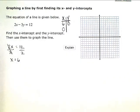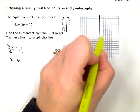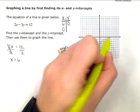My x-intercept is at (6, 0). I cross the x-axis at positive 6.